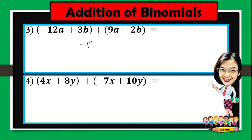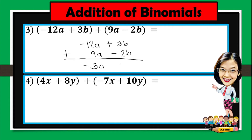Negative 12a plus 9a gives negative 3a. And in here, 3b plus negative 2b is 1b. However, if the numerical coefficient is 1, you don't need to write it anymore. So the answer will be b. So you have here negative 3a plus b.